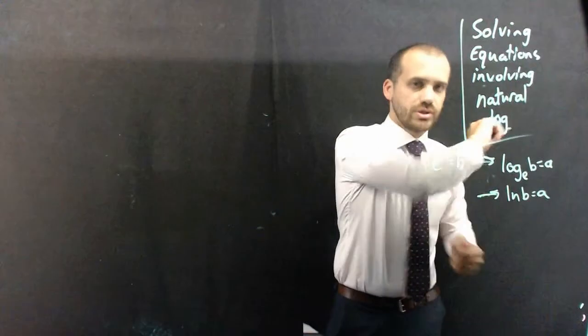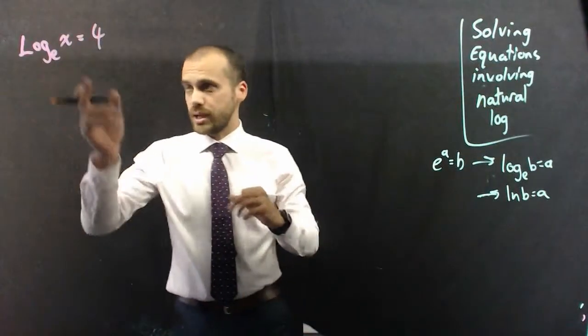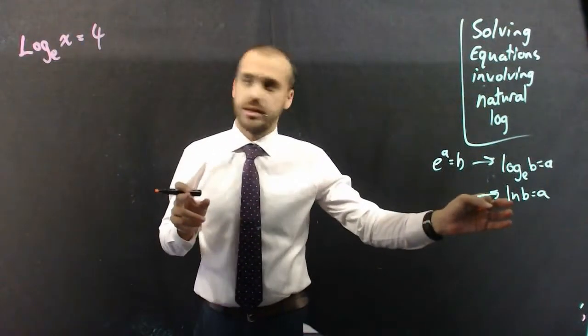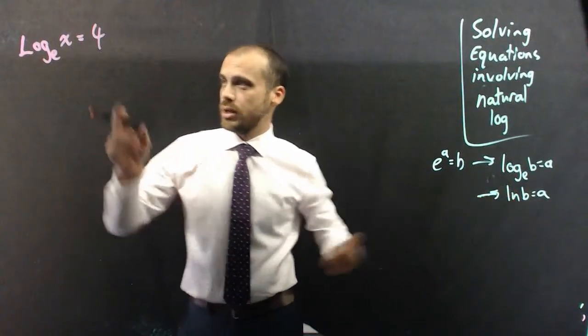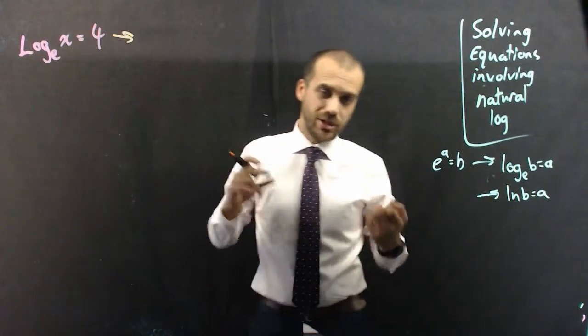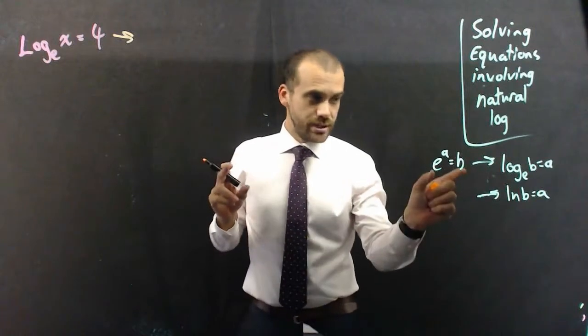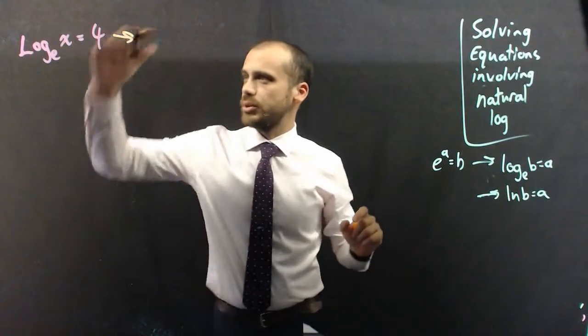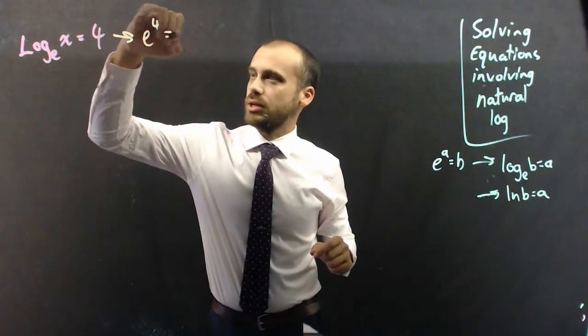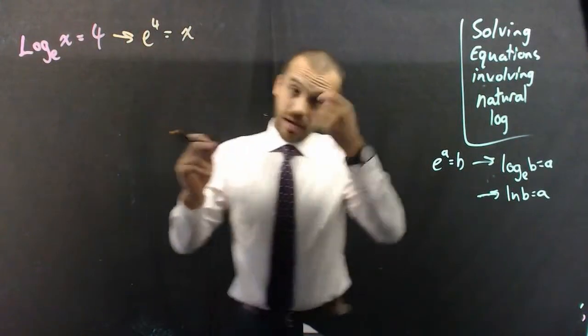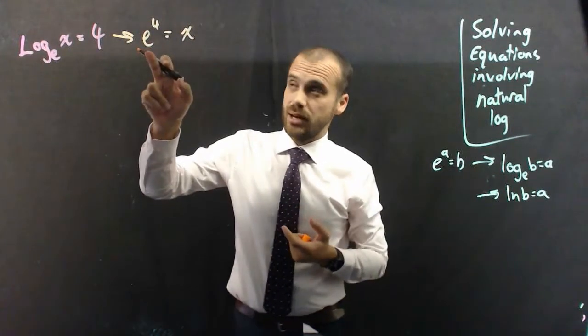Alright, so let's look at some equations involving natural log. First one, log base e to the x equals 4. I could have written it as ln x equals 4. Probably the best way to solve this, or maybe the only way to solve this, is to write it in this form. So, we can write it as e to the 4 equals x. And then we can just type that into